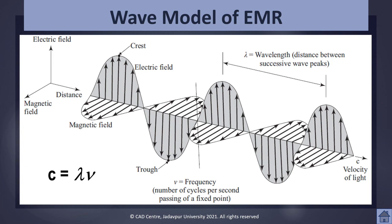These two fluctuating fields are called the electric field and the magnetic field. In the figure, the gray wave represents the electric field and the white wave represents the magnetic field — they are perpendicular to each other. The electric field is shown as vertical and the magnetic field as horizontal, though the opposite is also possible. The wave starts from zero, reaches its positive maxima (crest), returns to zero, reaches its negative maxima (trough), and returns to zero again — this constitutes one complete wave.